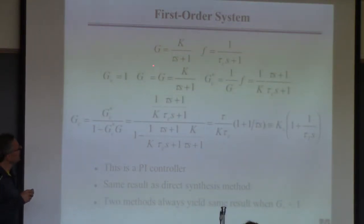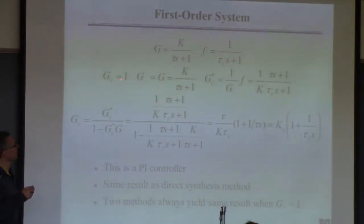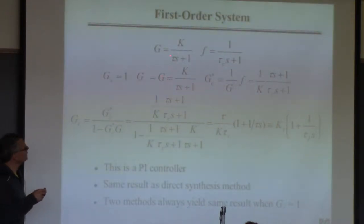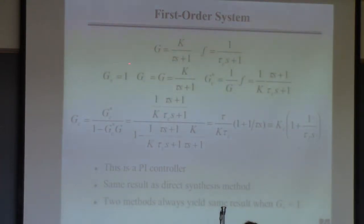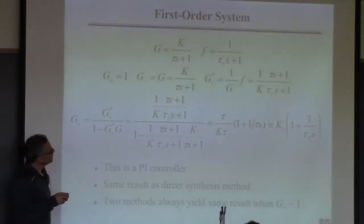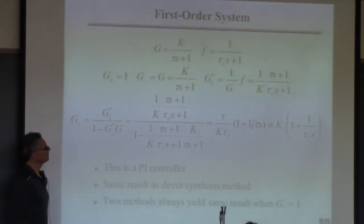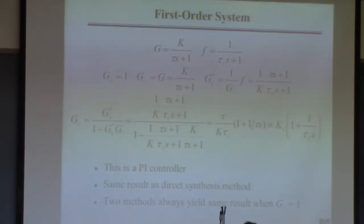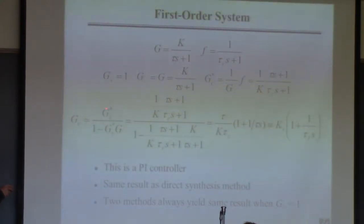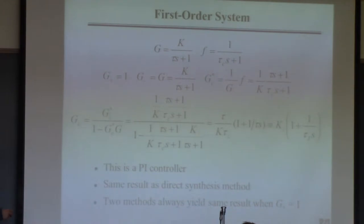G_minus is whatever's left over. So you look at G and ask: what naughty stuff is in G? Is there a time delay? No. Is there a right half plane zero? No, because there are no zeros at all. There is no naughty stuff, so G_plus is one, which means G_minus is G — everything in this case. Typically G_plus will not be one. So now you have your G_minus, and you can use the equation: form the IMC controller GC* = (1/G_minus) * F.